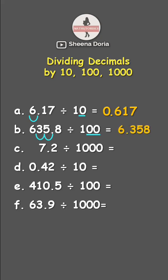Next, 7.2 divided by 1,000. So there are three zeros. So let's move three times. One, two, and three. Now let's place zeros here. So our answer is 0.0072 or 72 ten-thousandths.